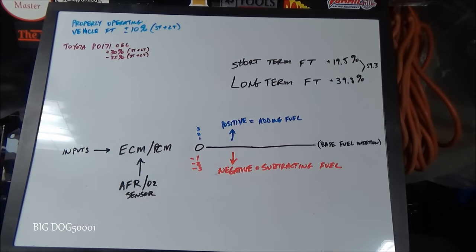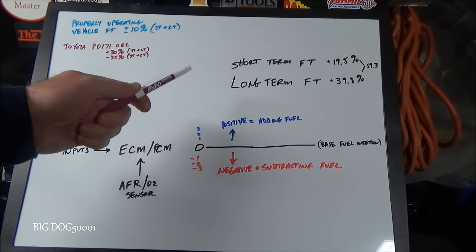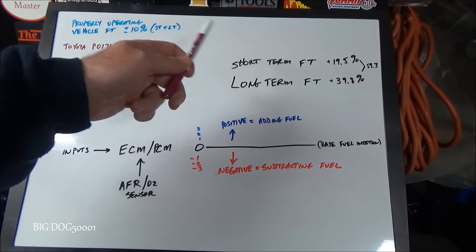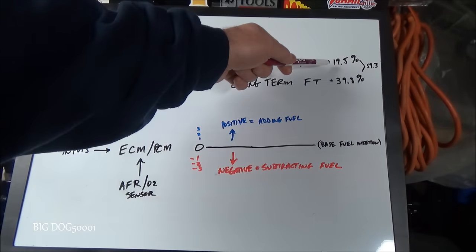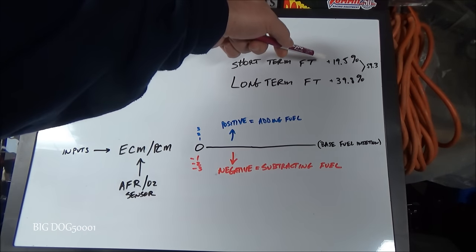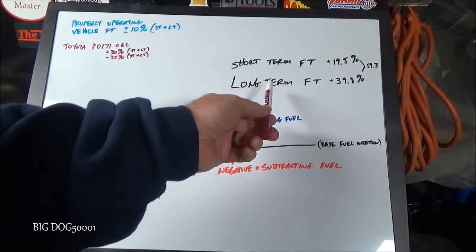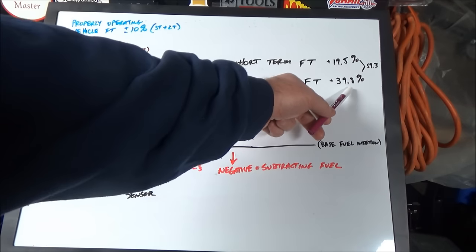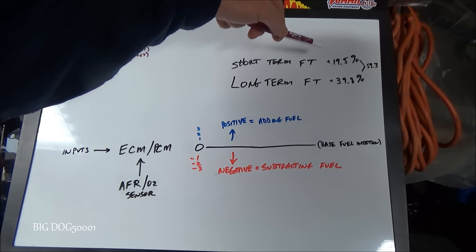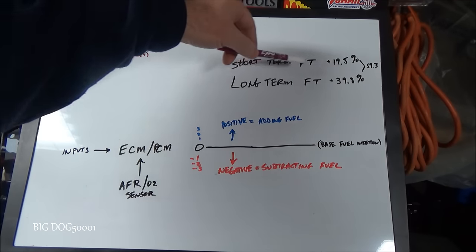Let's talk about long-term and short-term fuel trims. Our short term was plus 19.5% and long term was plus 39.8%. You add those two together and that's your total fuel trim — we're at 59.3%. The computer takes inputs like the mass airflow sensor and engine coolant temperature and uses a baseline of zero to determine how much fuel to inject.